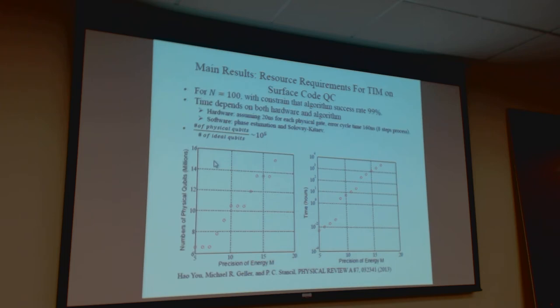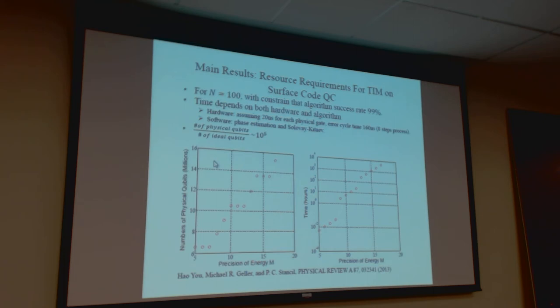If you look at the bottom-left plot, it gives you the number of physical qubits versus the precision of the energy. We are working on this. A question was raised: have you also included the cost of state preparation, or is this just the cost of the phase estimation? We didn't consider state preparation — we just consider everything required in the phase estimation. The precision of energy M is the number of bits — yes, that's right, in binary.